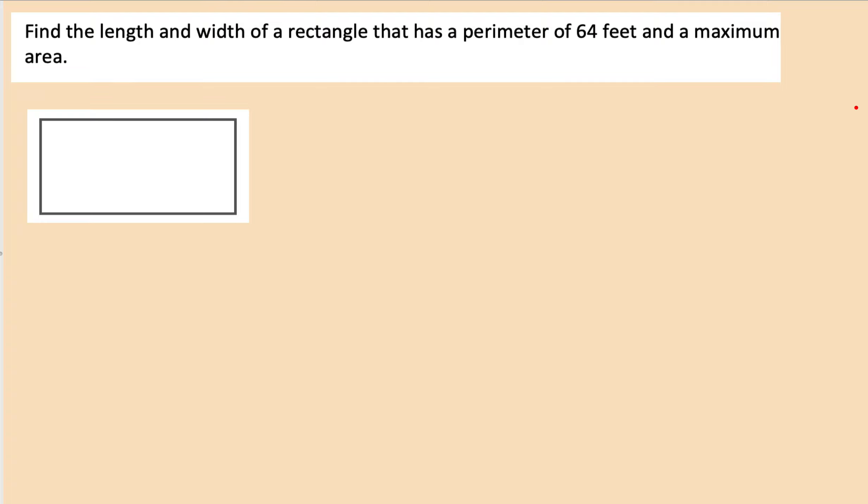Last problem, find the length and width of a rectangle that has a perimeter of 64 and a maximum area. So we'll call this x and this y. And we know the perimeter is equal to 64, which is equal to 2x + 2y. So we can say 32 = x + y.